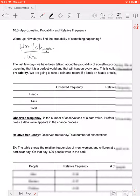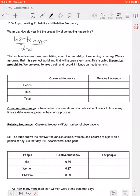So the last few days we've been talking about probability of something occurring. We are assuming that it is a perfect world and that will happen every time. This is what we call theoretical probability. So in theory, when we roll a die, we'll get a 1 one out of every 6 times. In theory, we'll get a 3 one out of 6 times. Or if we're flipping a coin, we'll get heads 1 out of 2 times. That doesn't always happen in real life. If we saw that in the video we watched at the beginning of this chapter.